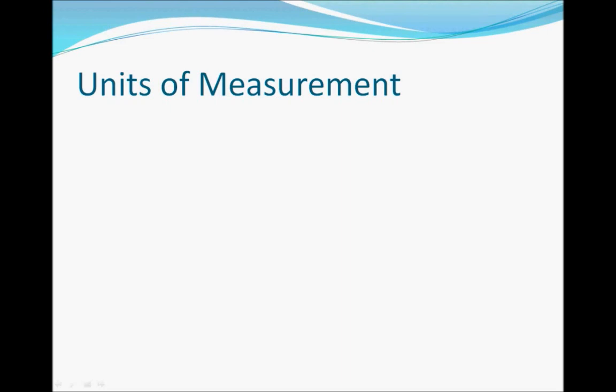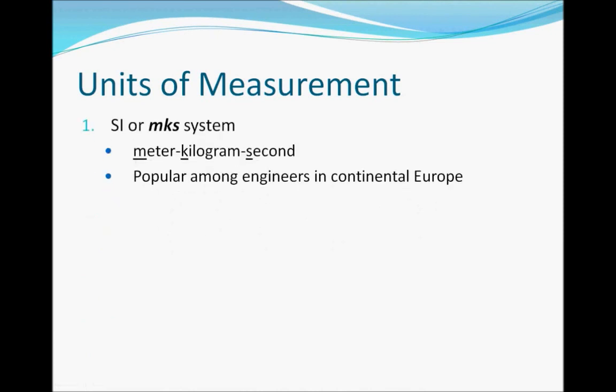There are countless systems of measurement in the world used by different people for different purposes. However, in the world of engineering there are two main systems. There is the SI, which stands for System Internationale. That's a newer system originating in France that's now becoming more and more popular across the world. It's also sometimes called the MKS system, which is an abbreviation for meters, kilograms, and seconds.